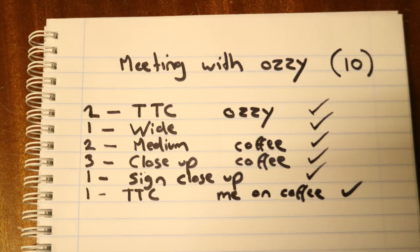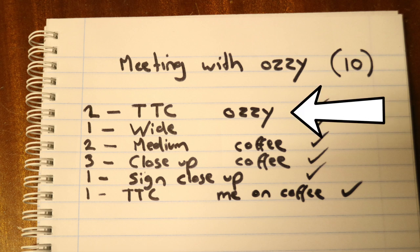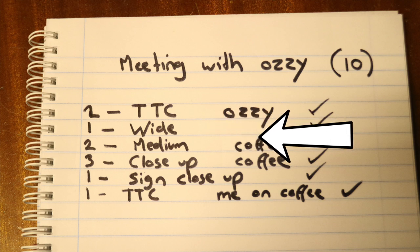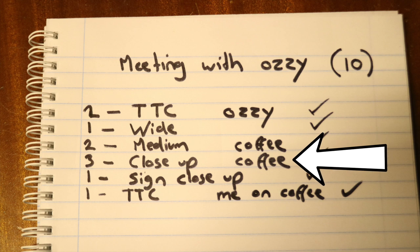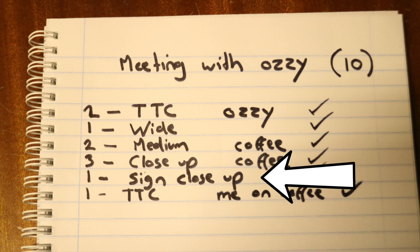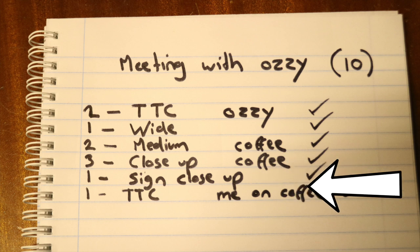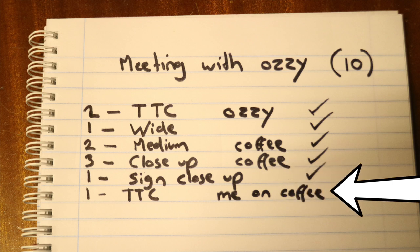The first thing I need to see is that I got all the shots, so I made a 10-shot activity template here for 'Meeting with Ozzy.' There are two talking-to-camera shots I want to get with Ozzy — just short ones — one wide shot to establish where we are, two medium shots of the coffee being made, three close-up shots of coffee being made, one close-up of the sign, and an extra talk-to-camera shot of me talking about the coffee.